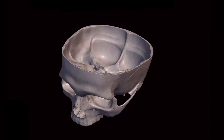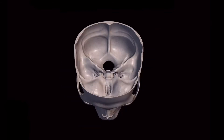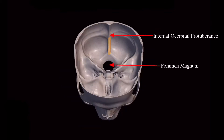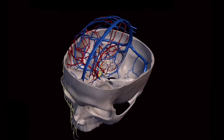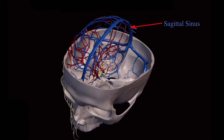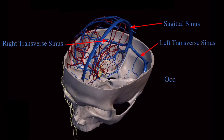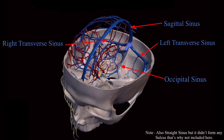Below the internal occipital protuberance, a crest runs downward called the internal occipital crest, which is also a sulcus. The center of it shows a depression, and in that depression is present the occipital sinus. So the internal occipital protuberance is the meeting point of four sinuses: one sagittal sinus from above, two transverse sinuses from two sides, and one occipital sinus from below. This meeting point of all the sinuses is called the confluence of sinuses.